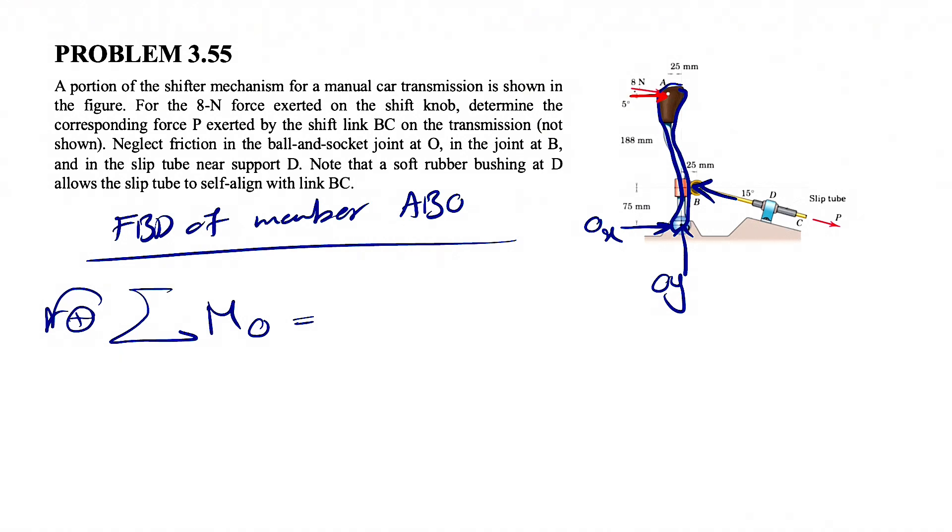I'll start with the 8 Newton force. The horizontal component, since we know this angle is 5, would be 8 cosine of 5 degrees. And this will be the vertical component, 8 sine of 5.